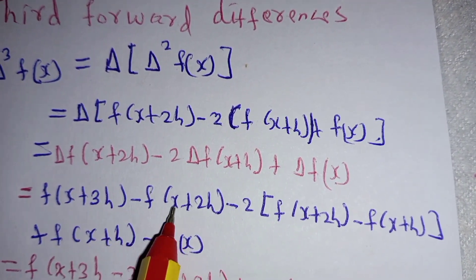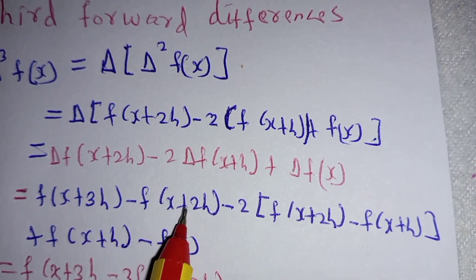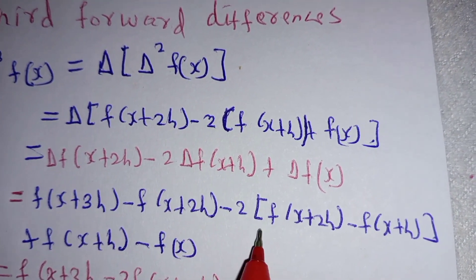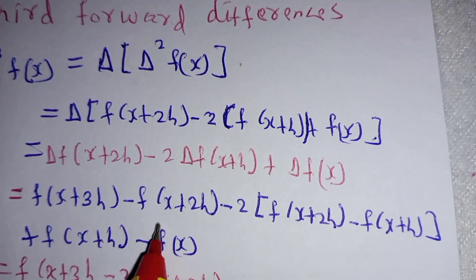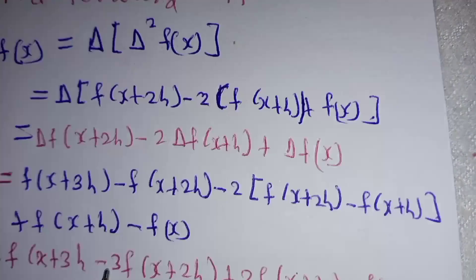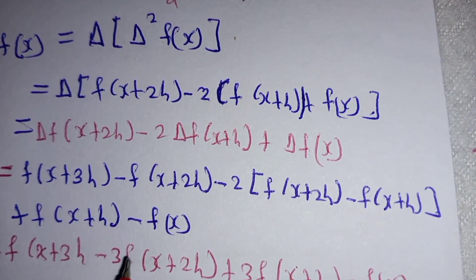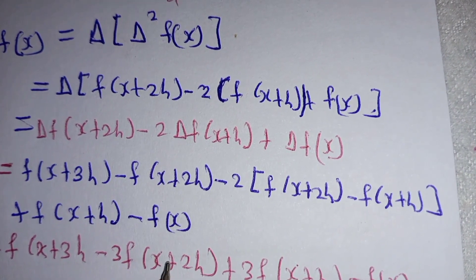Clearly, you can see we have one f(x+2h) here and two f(x+2h) from the -2 term. So we combine these two to obtain f(x+3h) - 3f(x+2h).